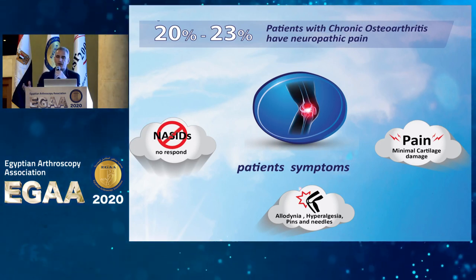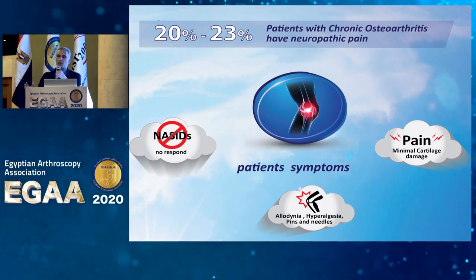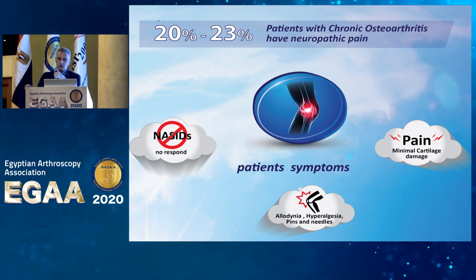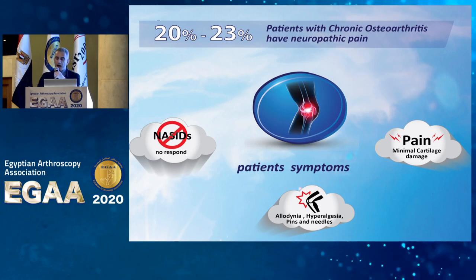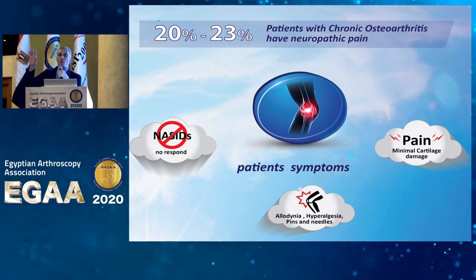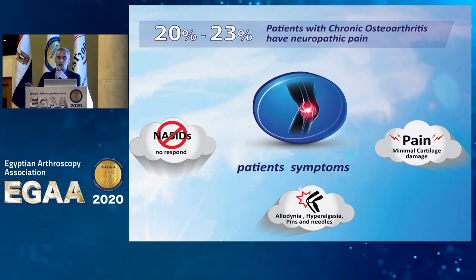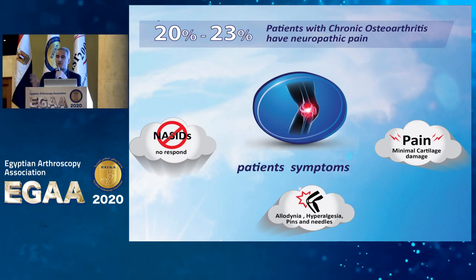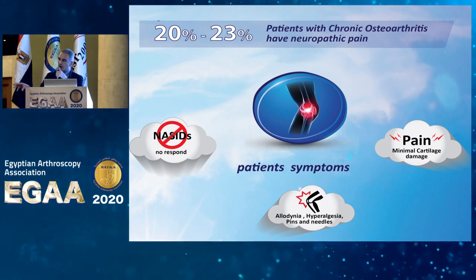This leads us to look at the criteria for the presence of neuropathic-type symptoms in patients with arthritis. These patients come complaining of pins and needles in their legs; some have hyperalgesia and others have allodynia. Regardless of how much the joint is damaged, 20 to 23% of patients with knee arthritis have some form of neuropathic pain — it's not only pain related to inflammation within the joint.